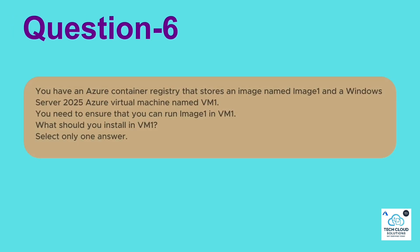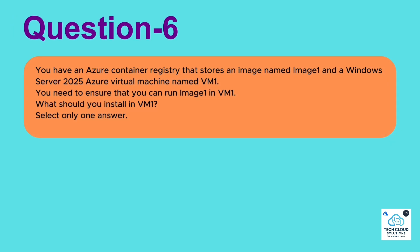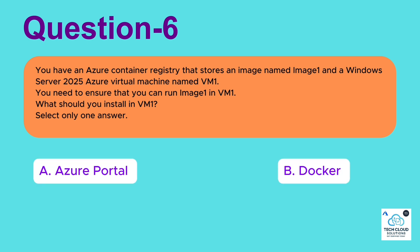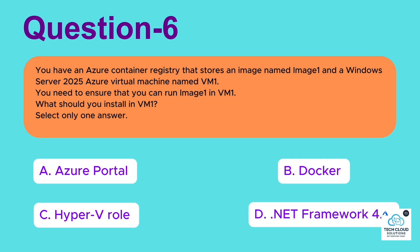Question 6: You have an Azure Container Registry that stores an image named Image1 and a Windows Server 2025 Azure Virtual Machine named VM1. You need to ensure that you can run Image1 in VM1. What should you install in VM1? Select only one answer. A. Azure Portal. B. Docker. C. Hyper-V role. D. .NET Framework 4.8.